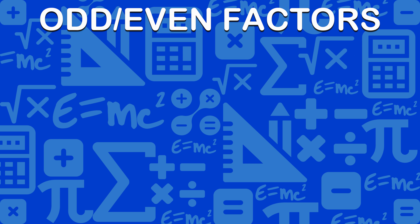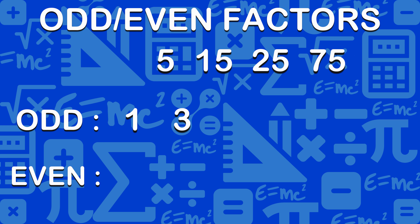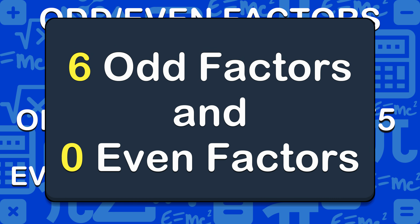Let's have a look at odd and even factors. The odd factors are: 1, 3, 5, 15, 25, and 75. There are 6 odd factors and 0 even factors.